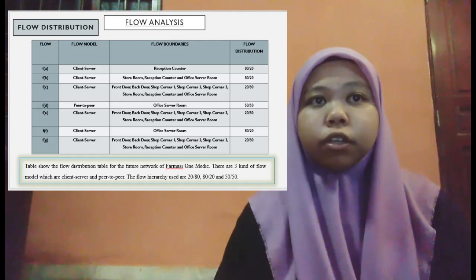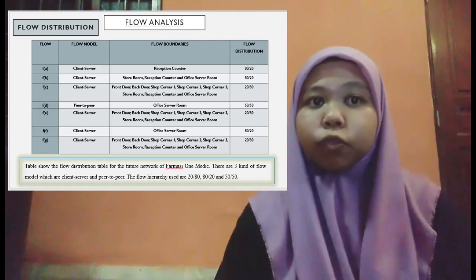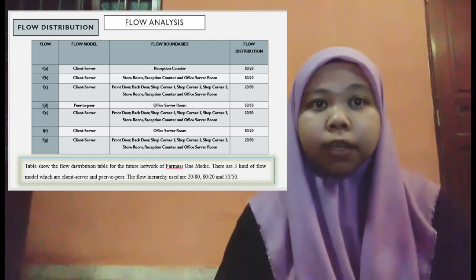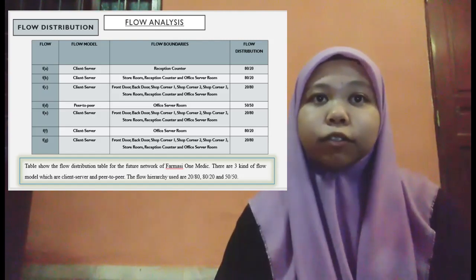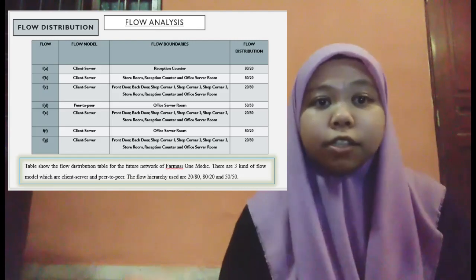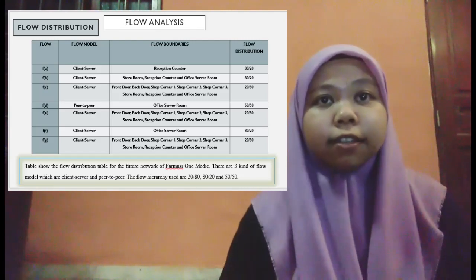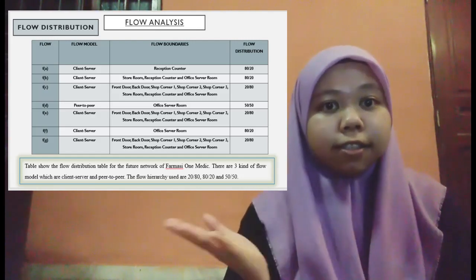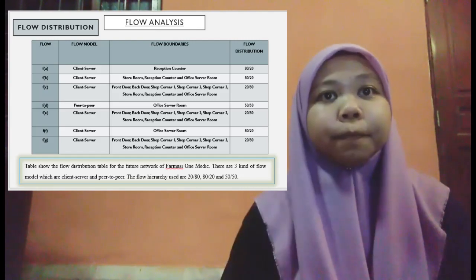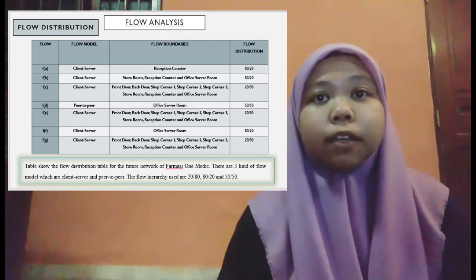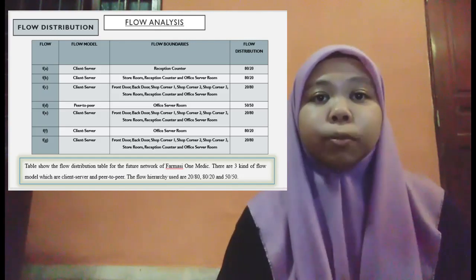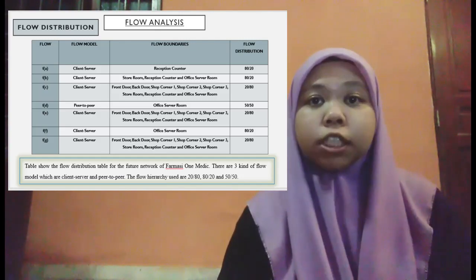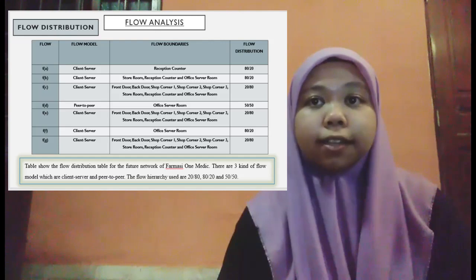For the last flow, G, the model is client-server. The flow boundary covers all locations as shown in the table, and the flow distribution is 20/80.